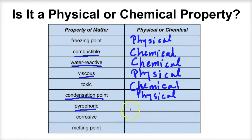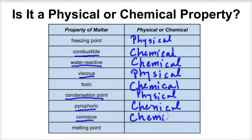If something is pyrophoric — meaning it ignites in air — that's going to be a chemical property. If something is corrosive, like battery acid, that's going to be a chemical property of that substance. And last but not least, if we said that the melting point of ice is 0 degrees Celsius, that too will be a physical property. That's not telling us how that ice is going to behave chemically.